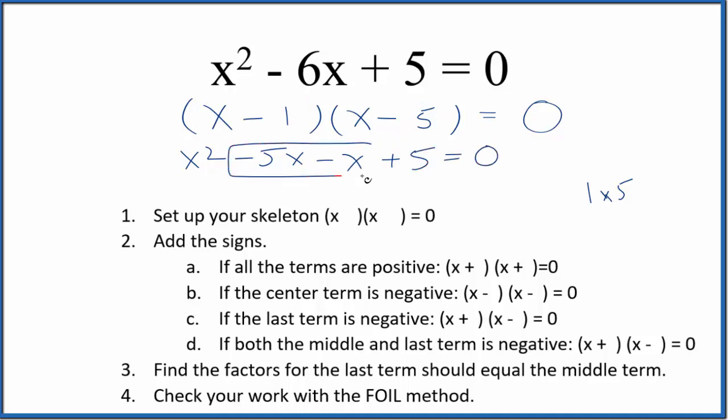So we could combine these right here, since they're similar. We end up with x squared minus 6x plus 5 equals 0. And this is the same thing as we got up here. So we know that we factored this correctly.